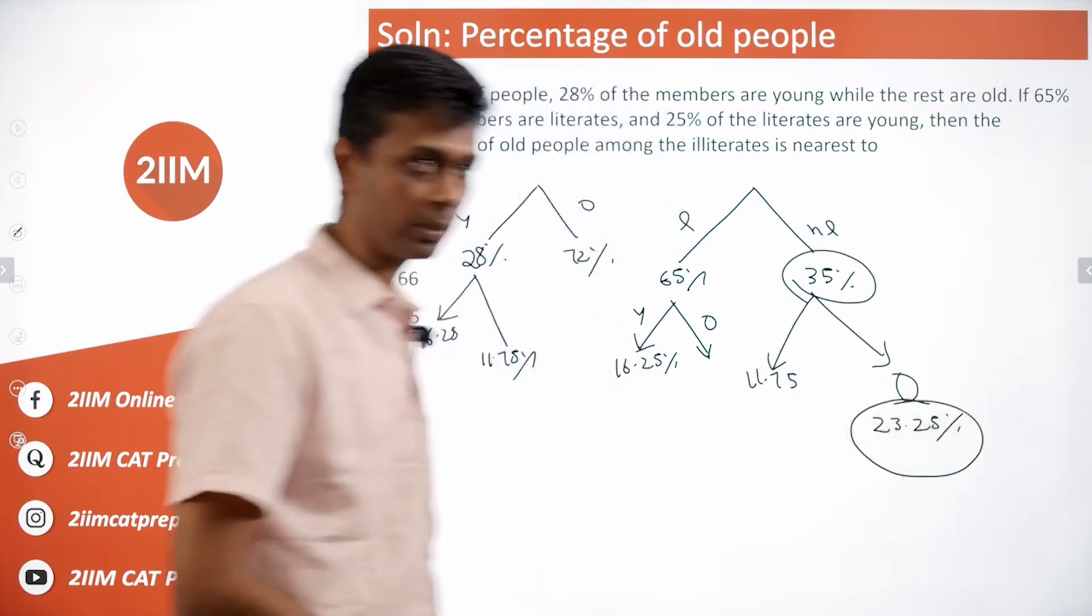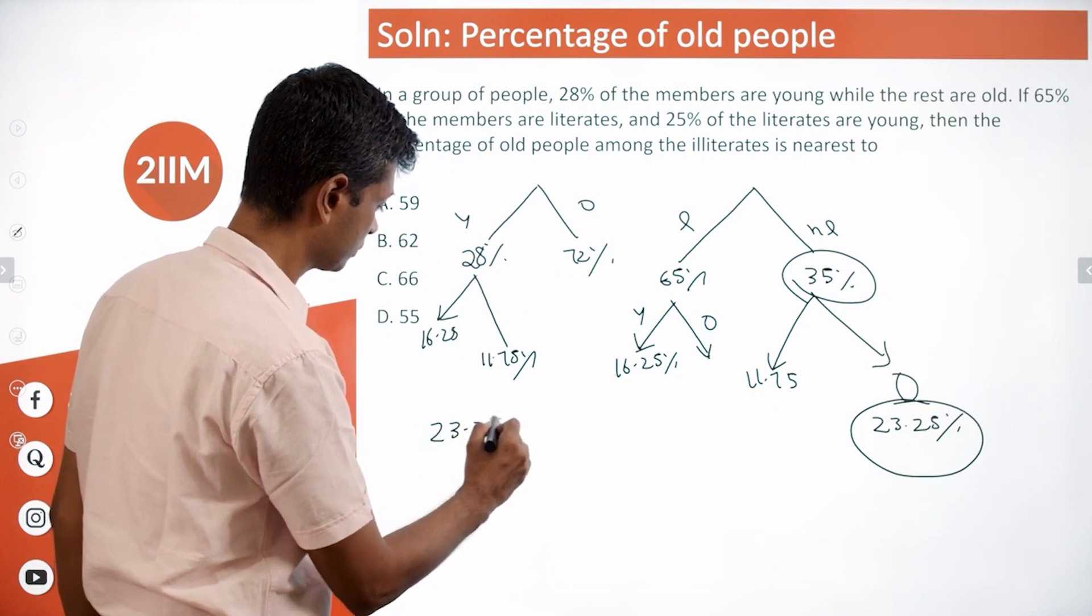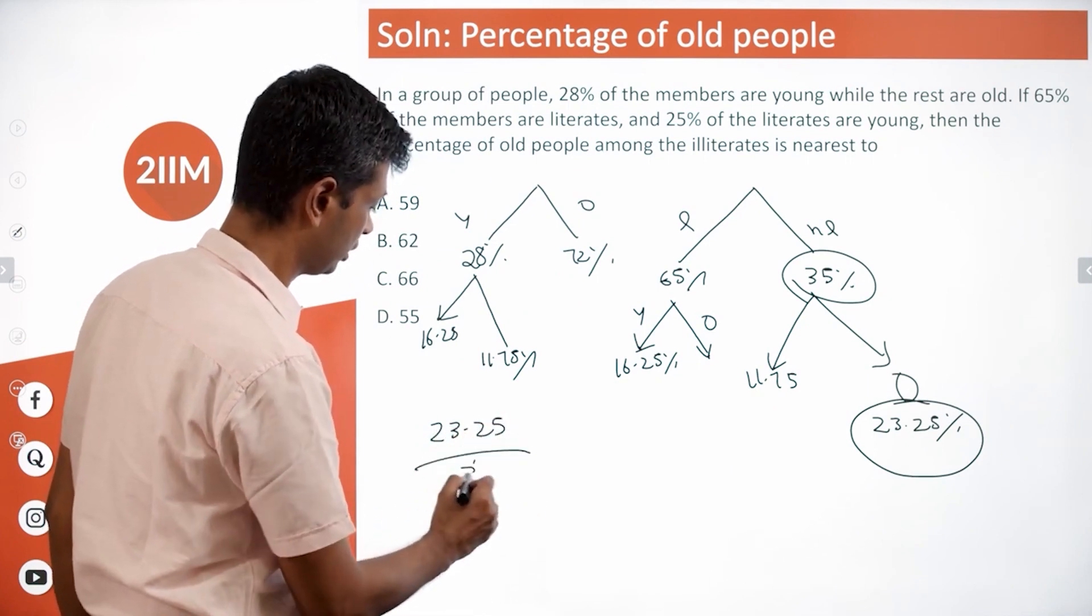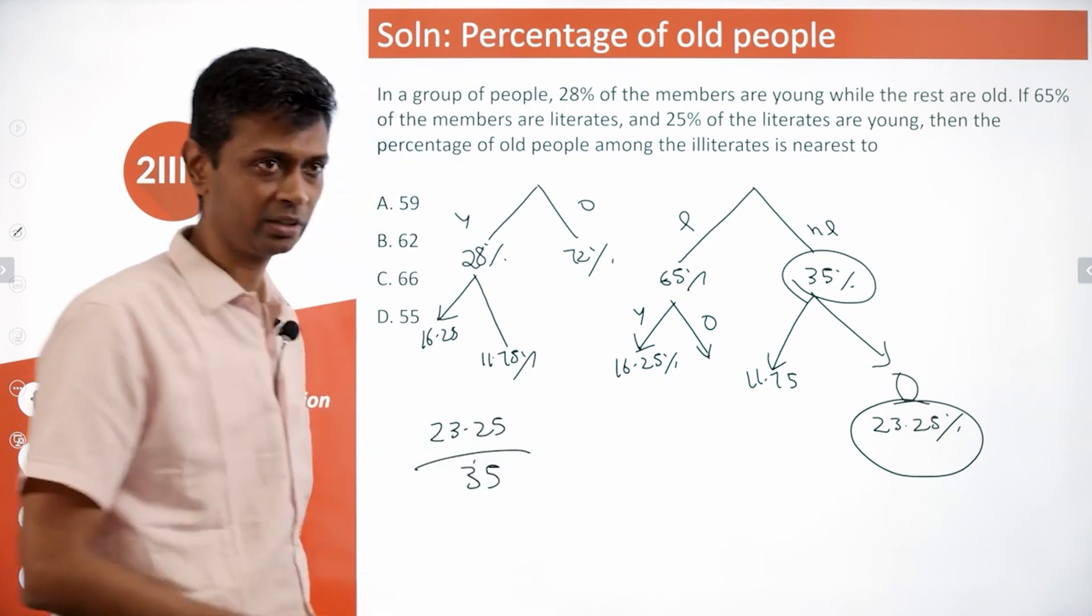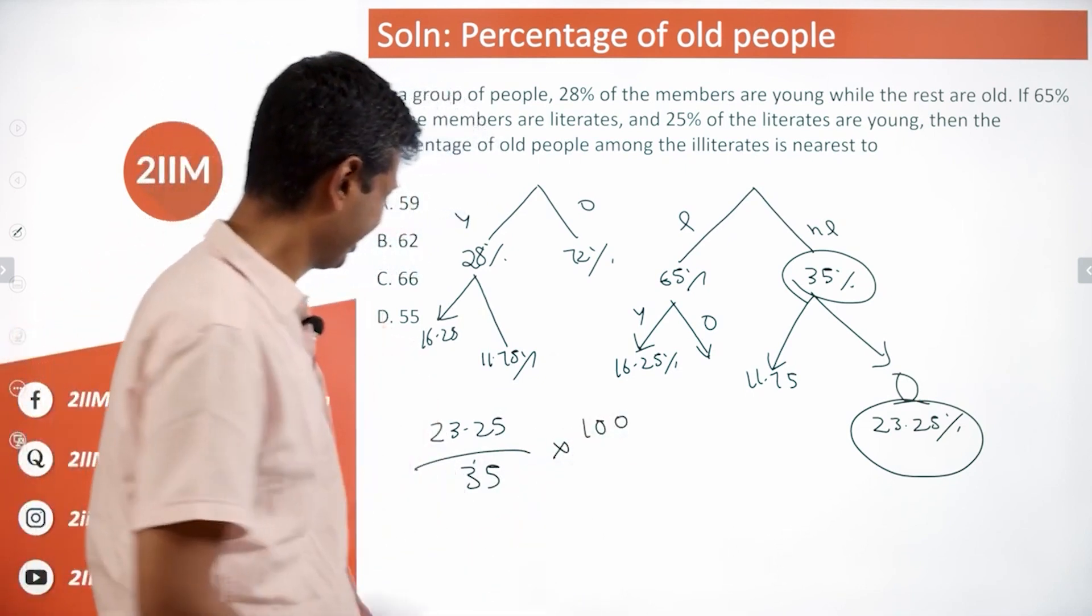23.25 divided by 35 times 100. I'm going to multiply by 4, the numerator and denominator, because I don't want to deal with 0.25.